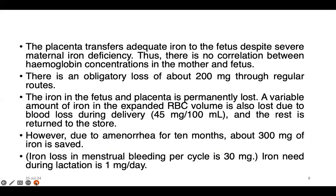In the initial 3 months there is no demand for iron, but in the second and third trimester, especially the third trimester, the placenta transfers adequate iron to the fetus despite severe maternal iron deficiency. If the mother has iron deficiency and her hemoglobin is low, the placenta still transfers adequate iron to the fetus. This is the reason there is no correlation between hemoglobin concentrations in mother and fetus — if the mother's HB is low it does not mean the fetus's iron is low. Because of lack of iron in the maternal body, the mother has complications, which is why iron supplementation is very important during pregnancy.